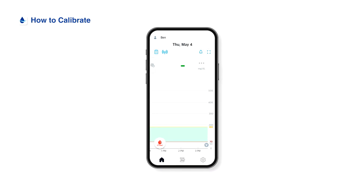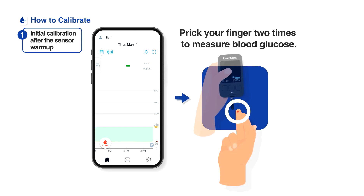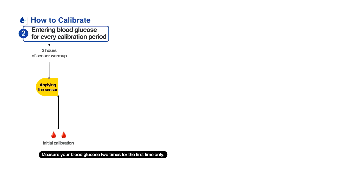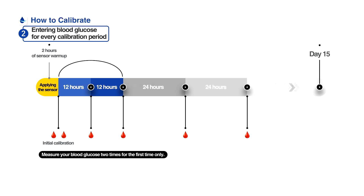Calibrate under the following circumstances: first, prick your fingertip two times after the sensor warm-up to measure blood glucose and enter these two readings for initial calibration. On the first day of sensor usage, calibrate every 12 hours, and on the next day, calibrate every 24 hours. After the first calibration, you only have to measure blood glucose once.